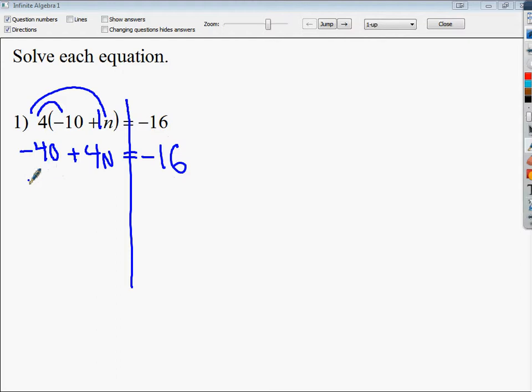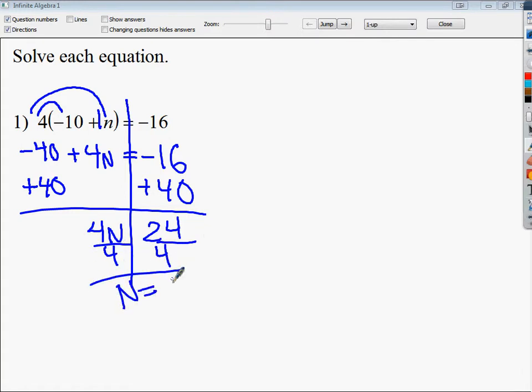You need to add 40 to both sides because it's the furthest thing away. And if you have negative 16 plus 40, I think that gives you 24. And you're going to divide by 4. A final answer of n equals 6.